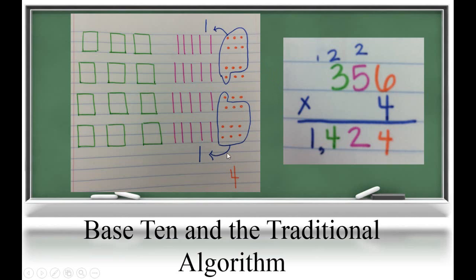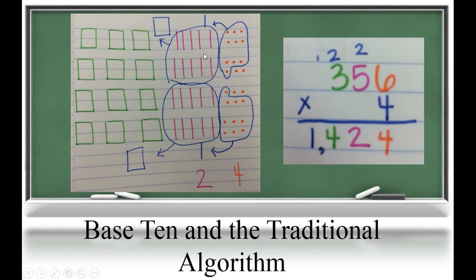So let's look at our traditional algorithm. We have 4 ones left over, and we record the 2 tens that we regrouped up here. Next, we multiply the tens. We have 4 groups of 5 tens is 20 tens, plus the 2 tens that we regrouped. We know that we have 22 tens, so we need to record 2 tens and 2 regrouped hundreds.